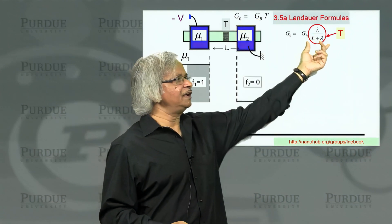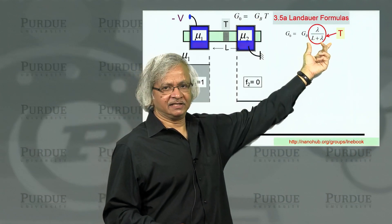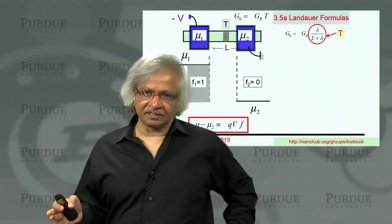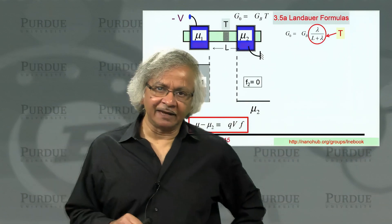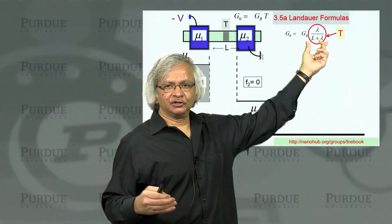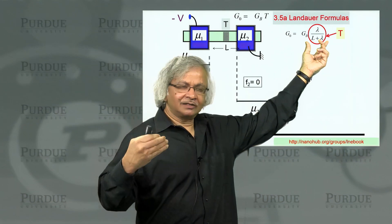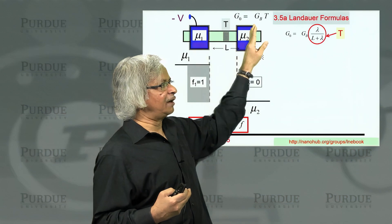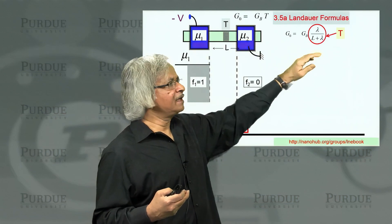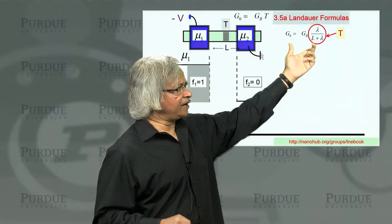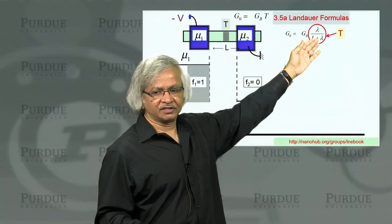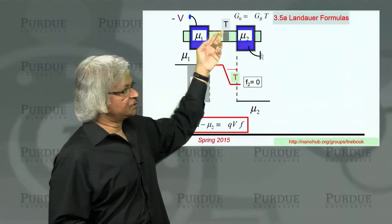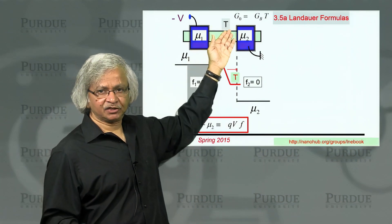If you compare this relation to what we have been working with so far, you'll notice that quantity we had for distributed scatterers is replaced by T. Indeed, we could interpret lambda over L as T. If you have a channel of length L with distributed scattering processes with a mean free path lambda, then this fraction tells you what fraction of the electrons incident from the left actually come out on the right.